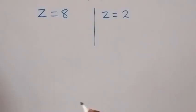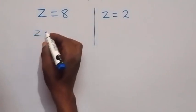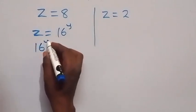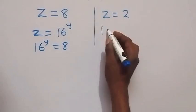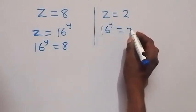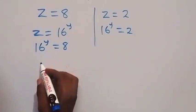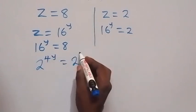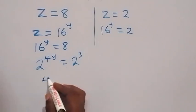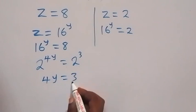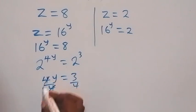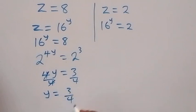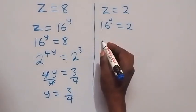Recall that z equals 16 raised to power y. For z equals 8: 16 raised to power y equals 8. Converting both sides to base 2, we have 2 raised to power 4y equals 2 raised to power 3. Since the bases are equal, 4y equals 3, so y equals 3 over 4.